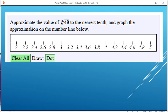Here we're looking to approximate or estimate the value of the cube root of 49. This is 3 of what number being multiplied by itself is 49, or 3 factors of what number equals 49.